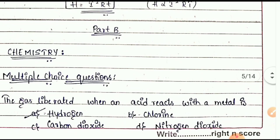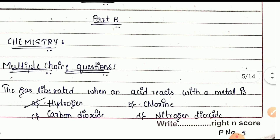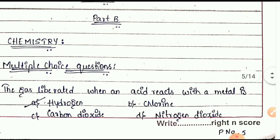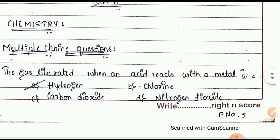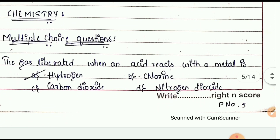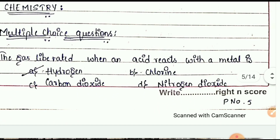Now, Part B — Chemistry. Questions 14, 15, and 16 are MCQ type. The gas liberated when acid reacts with metal is hydrogen.